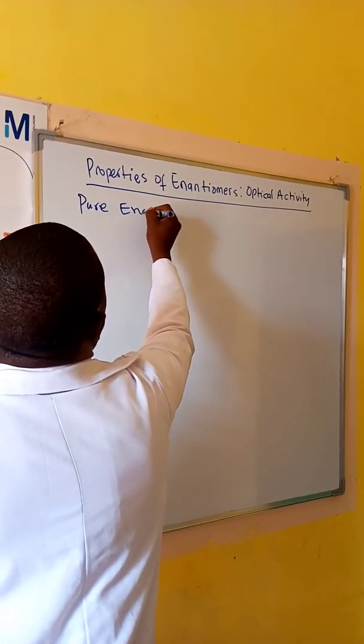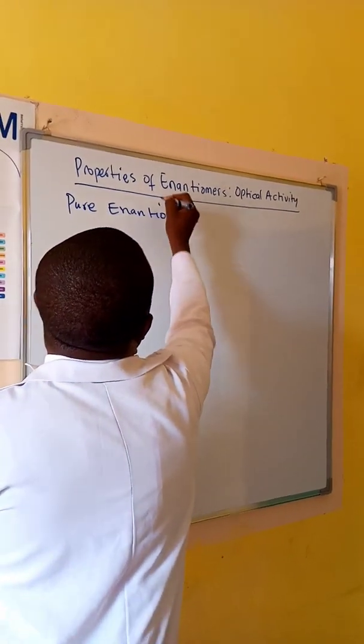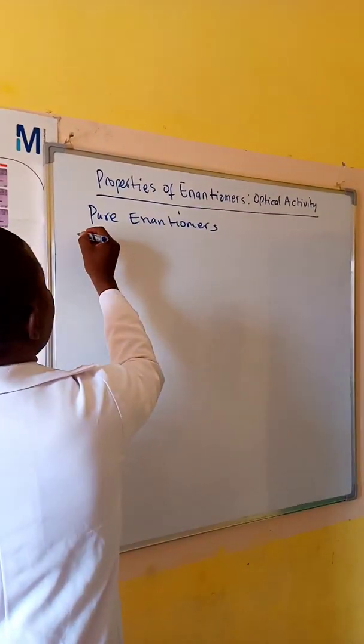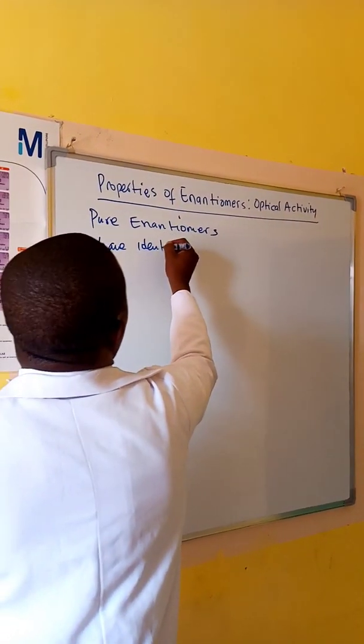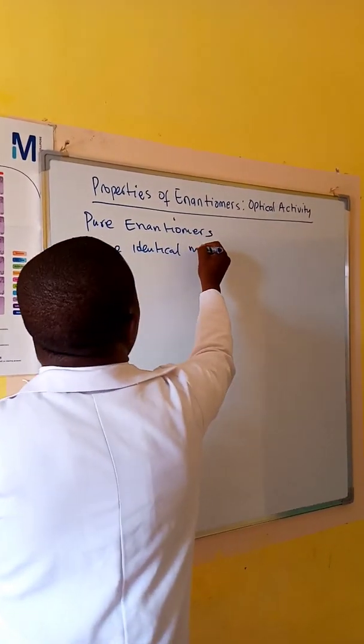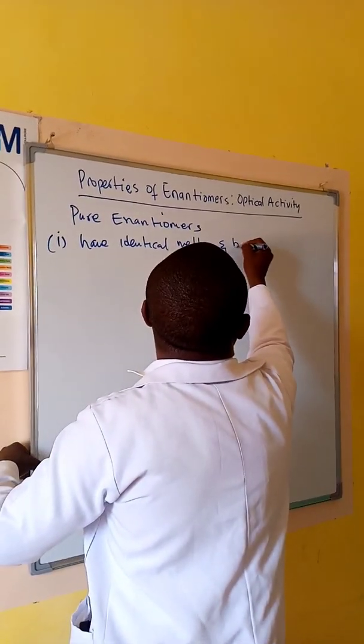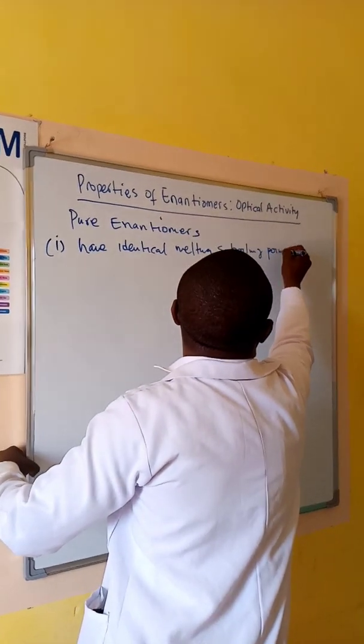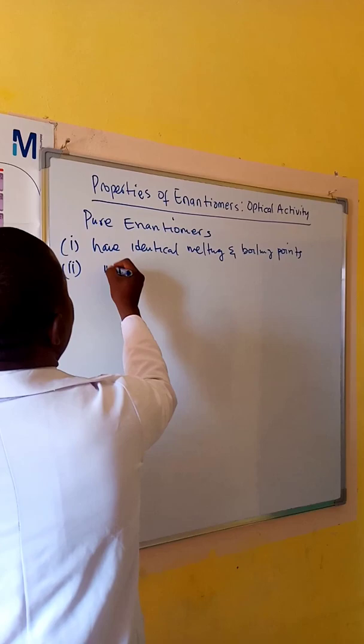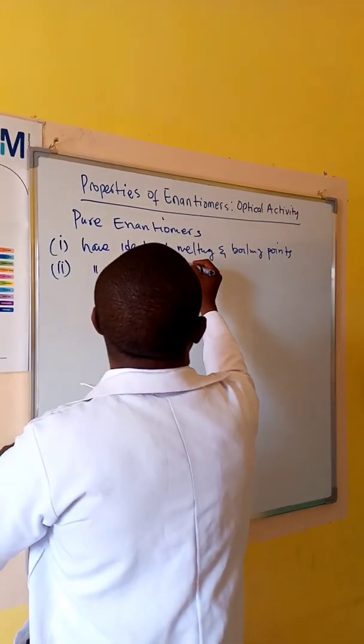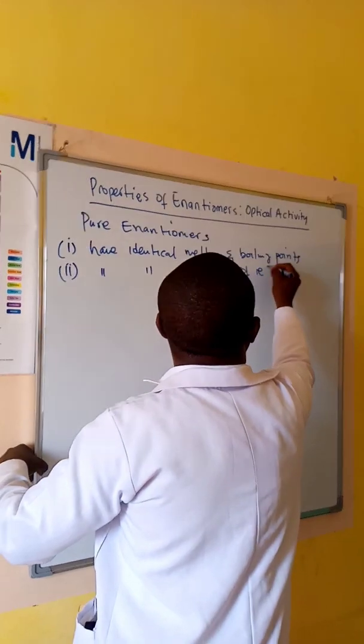Pure enantiomers have, one, identical melting and boiling points. Two, identical indexes of refraction.